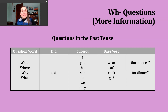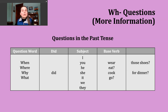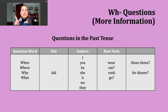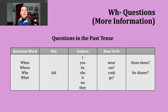When we go to make this type of question in the past tense, the general structure is: we start with a question word, then we use did, then we have our subject, and then the base verb. Notice here I'm not adding -ed to my verb, and I'm not using the irregular past tense form either. We go back to the base verb, and the reason for that is we have did — that is what signals to someone that this is a question about the past tense.